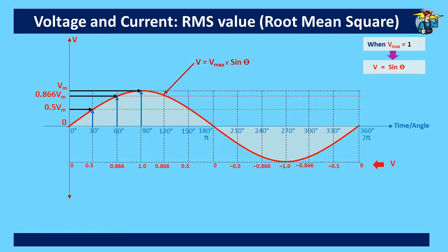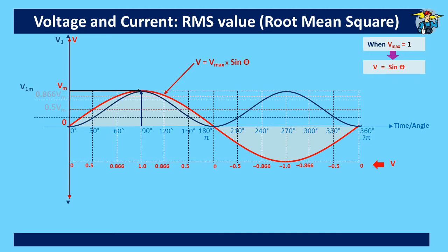When we consider the area covered by the voltage curve here, you will see two halves are equal in size but cancel out since one is positive and the other is on the negative side. We will consider a new curve with the equation V1 = V_max × sin² θ. With the condition of V_max = 1, this equation becomes V1 = sin² θ.